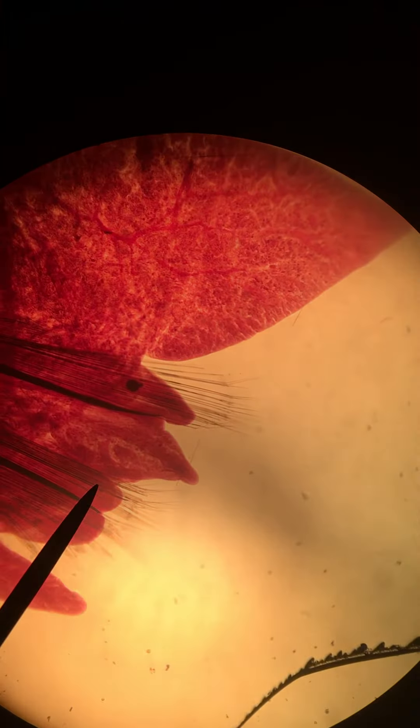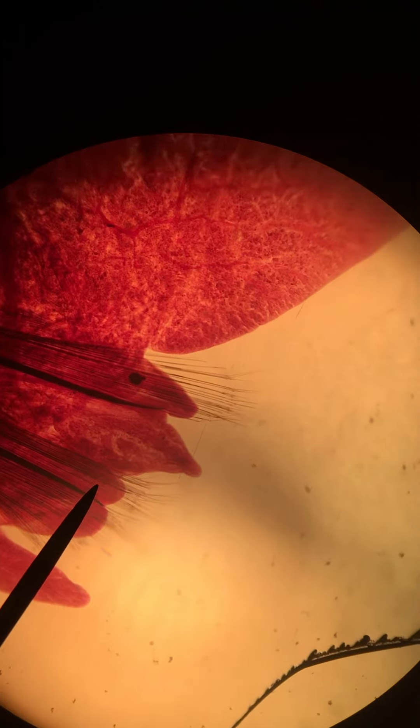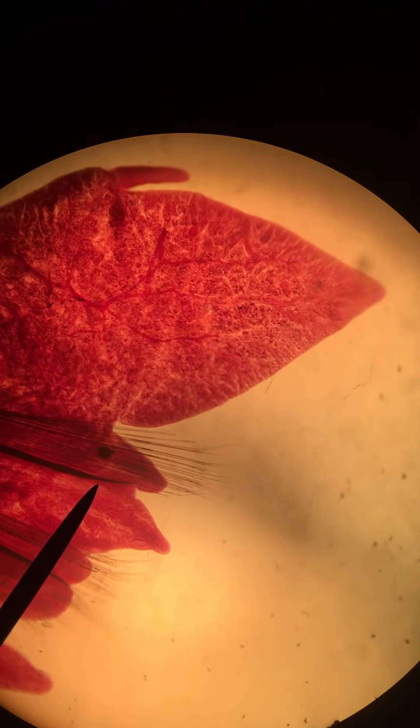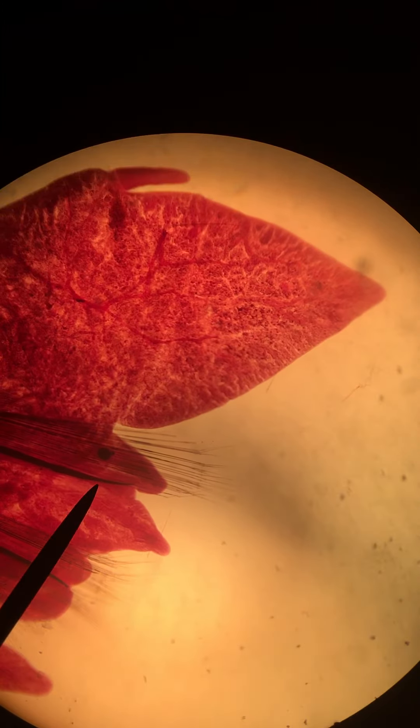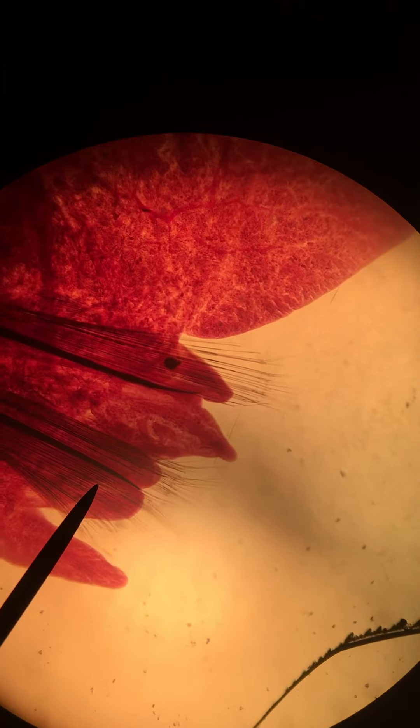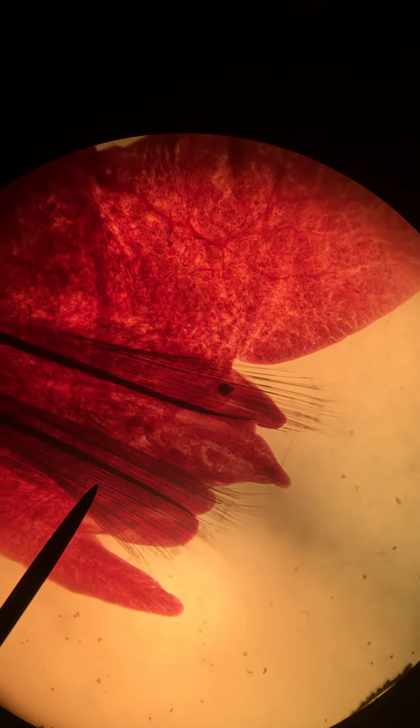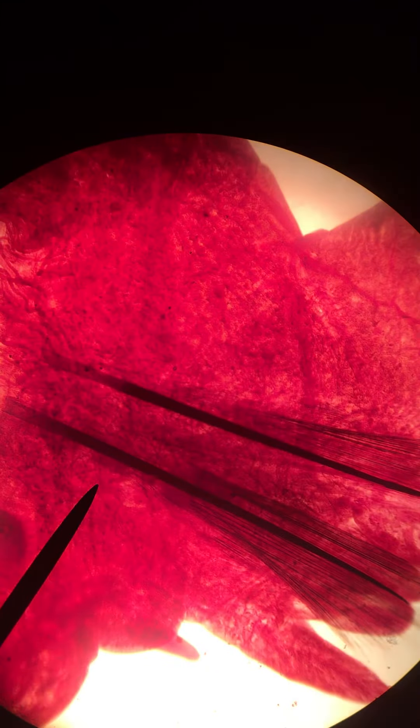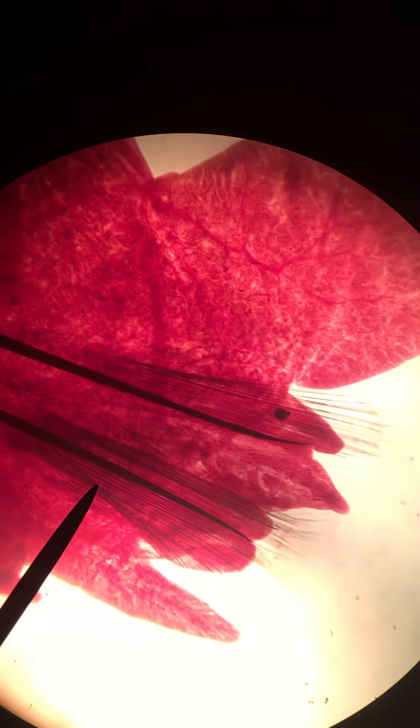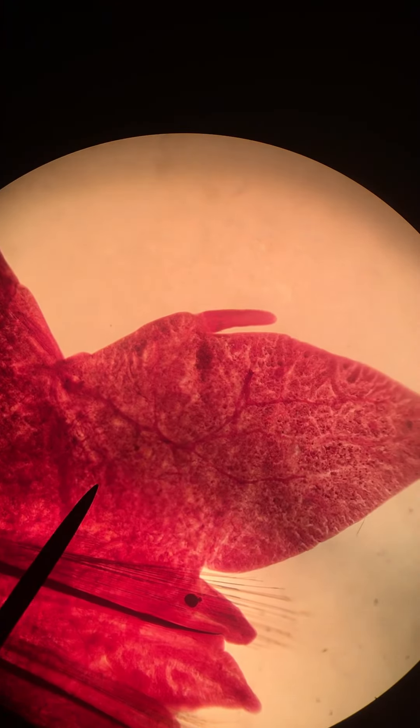And then these little fibers that you can see here, these are called setae. There's lots of little fibers that sort of branch out in both the notopodium and the neuropodium. There's two sets of those as well.